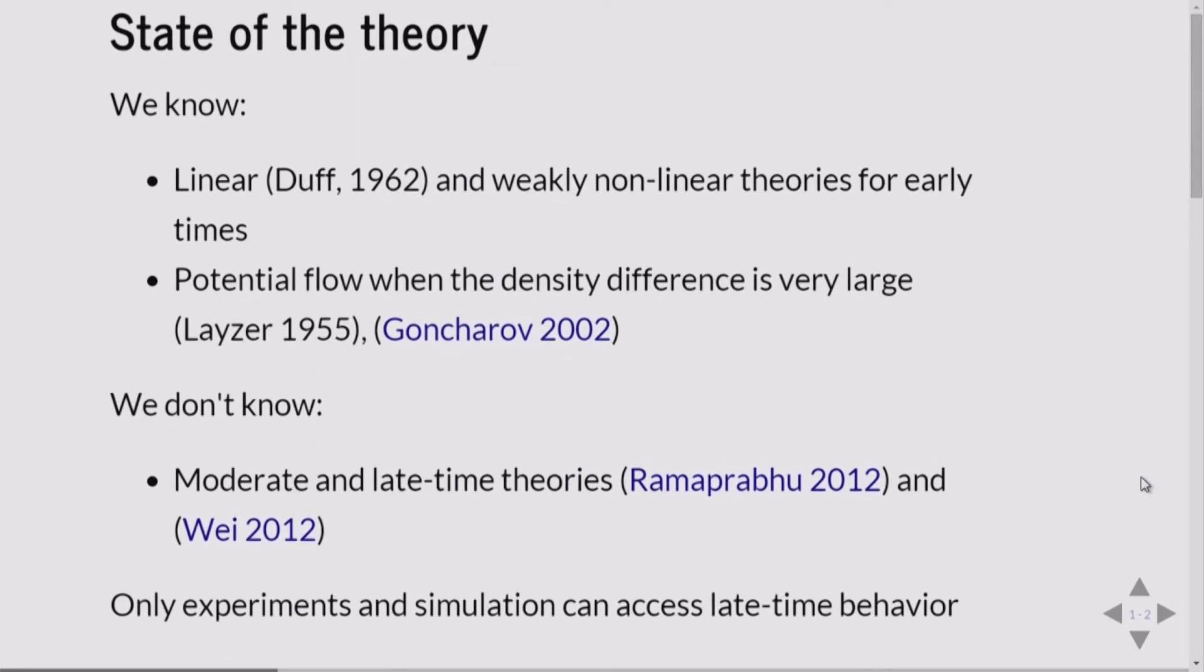The state of the theory is that as an instability problem, we can look at very small perturbations in the initial interface, so that corresponds to very early times in the simulations of the experiments. There's a linear theory, which was developed by Duff in 1962. There are also weakly nonlinear theories where you write down the dynamics as some sort of perturbation expansion, but really once the interface breaks whatever form your expansion was based on, it's no good.